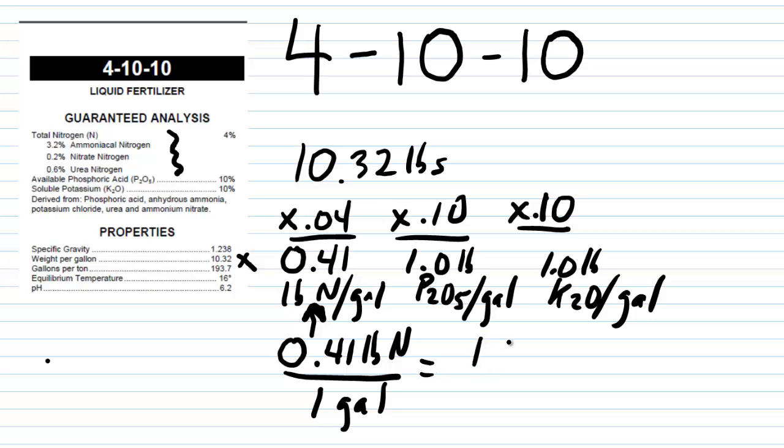So, if my desire is for 1 pound of nitrogen, how many gallons would that be? Remember, when you do a proportion, it doesn't matter what's on top, what's on bottom, as long as you're consistent. So, I've got pounds of nitrogen both on top, and I've got gallons on the bottom.